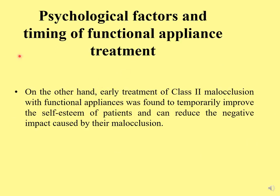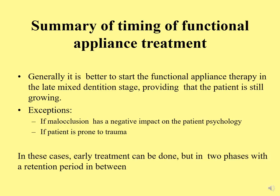Early treatment can be justified when there is a specific reason. Early Class II treatment with functional appliances was found to temporarily improve patients' self-esteem, so if a child has psychological concerns about their appearance or is susceptible to dental trauma, early treatment to reduce overjet may be appropriate. To summarize: it is generally better to start functional appliance therapy in the late mixed dentition stage, providing the patient is still growing — with exceptions for malocclusion negatively impacting the child's psychology or when the patient is prone to trauma, remembering that early cases require two-phase treatment with a retention period in between.